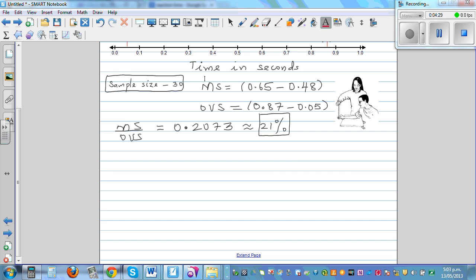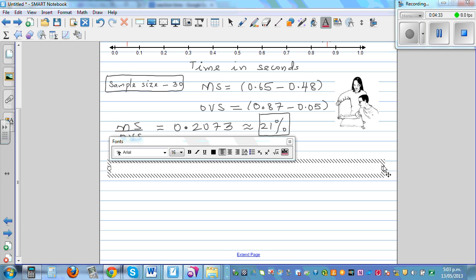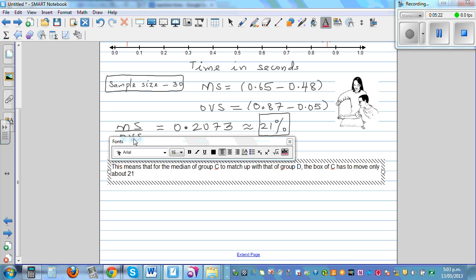So what does this number mean? This means that for the median of group C to match up with that of group D, the box of C has to move only about 21% of the OVS, overall visible spread.